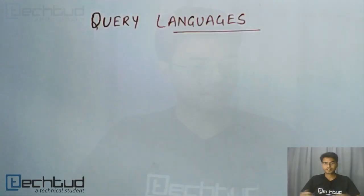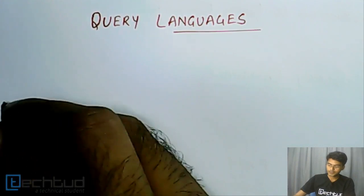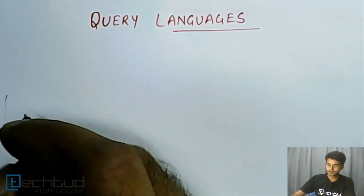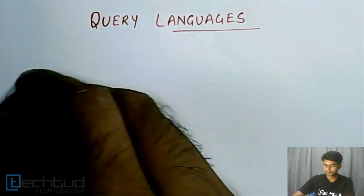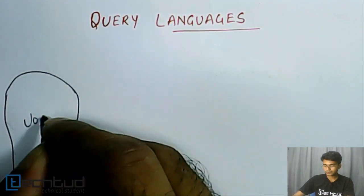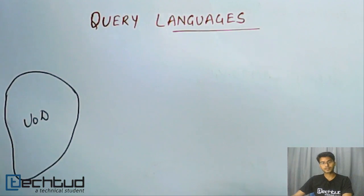Now we are starting a new chapter which is query language, and before we go further let's understand what we have done till now. So we started our study with universe of discourse. What is universe of discourse? It's the given requirement scenario from which we have to model our database.